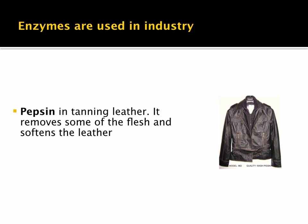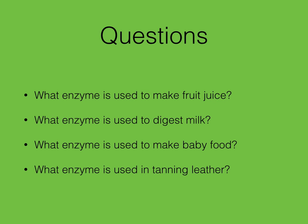Pepsin is used in tanning leather — it removes some of the flesh and softens the leather. Review questions: What enzyme is used to make fruit juice? What enzyme is used to digest lactose in milk? What enzyme is used to make baby food? And what enzyme is used in tanning leather?